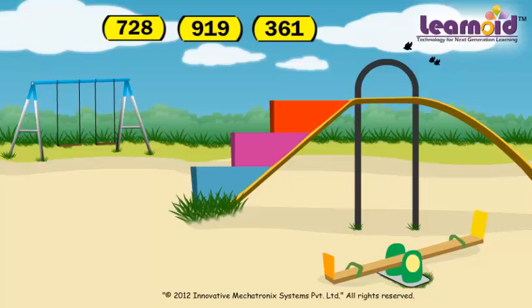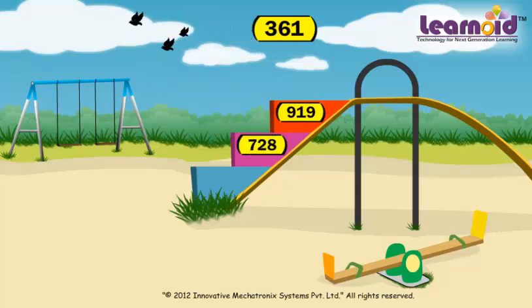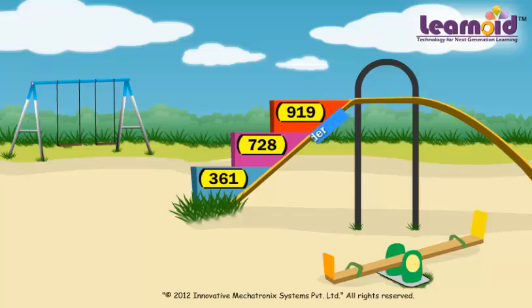First we will place the greatest number, that is 919, then 728, and then in the last we will place 381, which is the smallest number. These numbers are now in descending order.